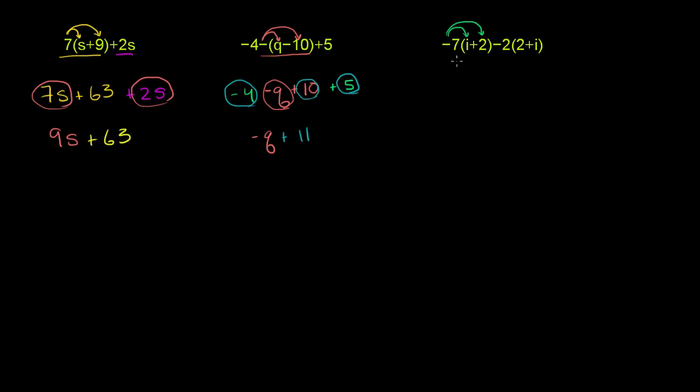So this is going to be equal to negative 7 times i, which is negative 7i, plus negative 7 times 2, which is negative 14. Or we could write plus negative 14, or we could just write minus 14. So that's this part right over here.